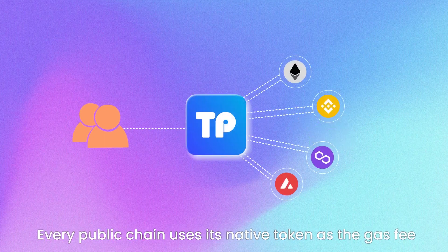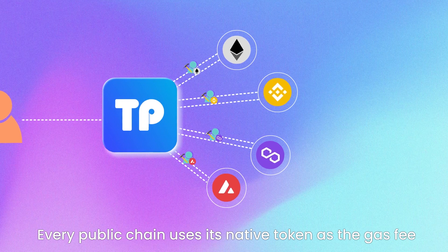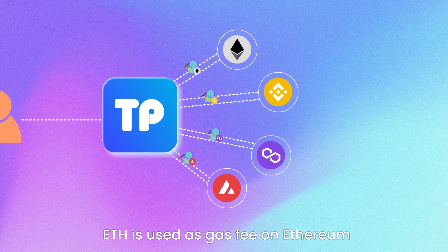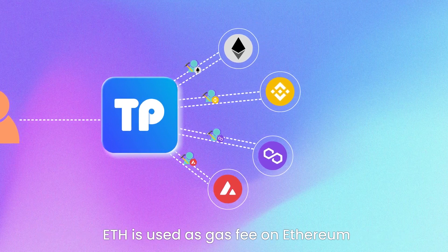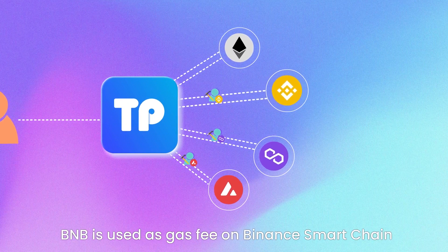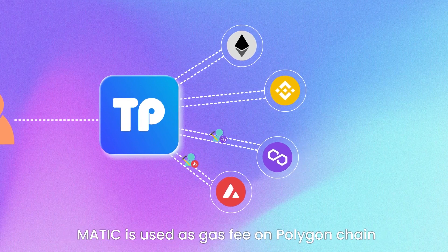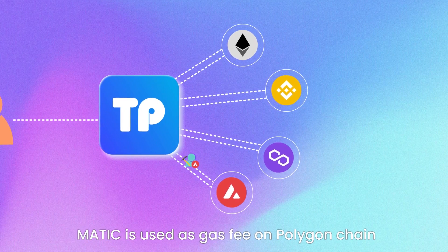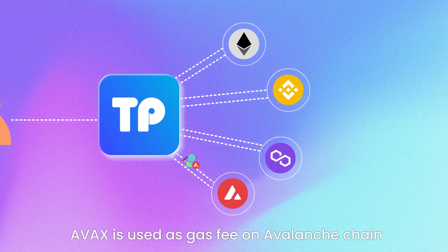Every public chain uses its native token as the gas fee. For example, ETH is used as gas fee on Ethereum, BNB is used as gas fee on Binance Smart Chain, MATIC is used as gas fee on Polygon Chain, and AVAX is used as gas fee on Avalanche Chain.